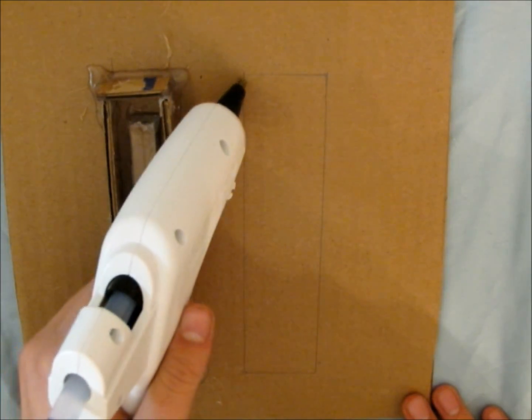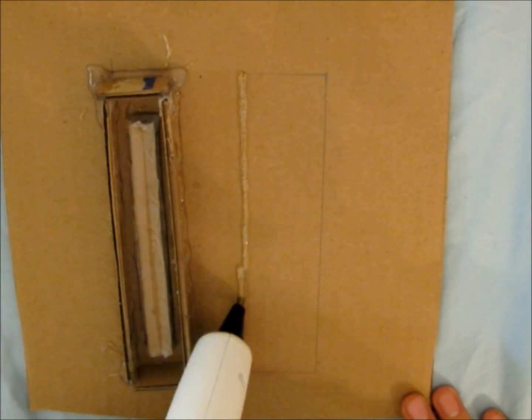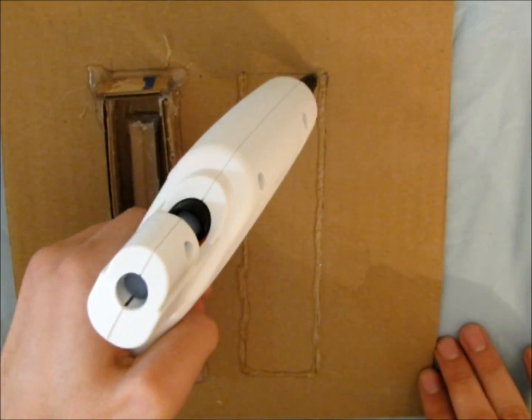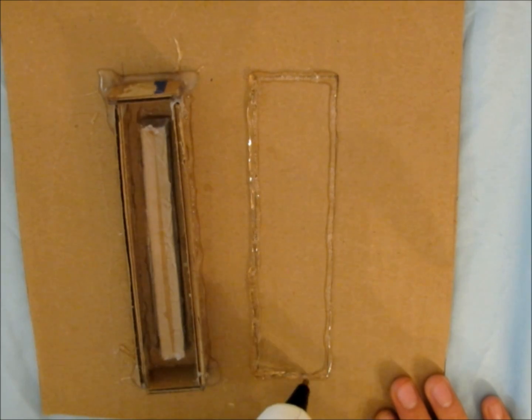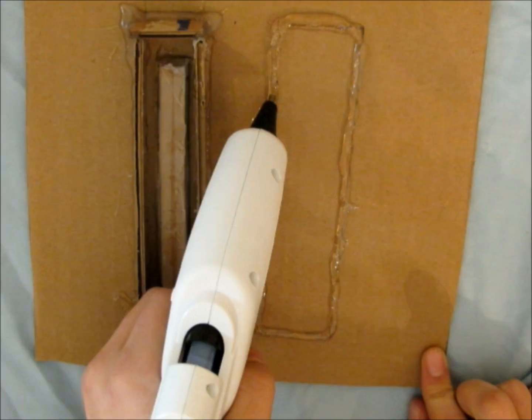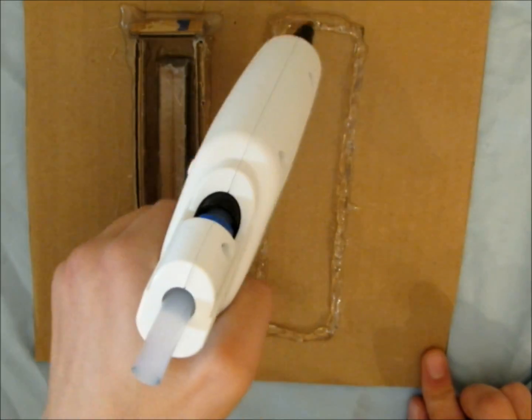Now it is time to make the mold for the bottom of the robot. Draw a rectangle on a piece of cardboard that measures seven inches by one and a half inches. Trace the lines with hot glue. After the glue cools, add another layer. Do this two or three times so that the walls of the mold are at least a quarter of an inch thick.